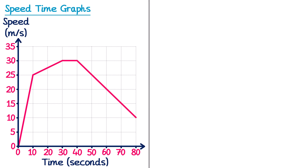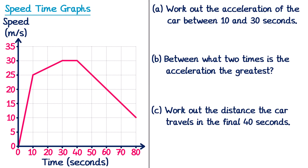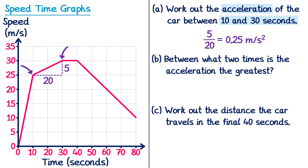Let's look at what an exam question could look like for this topic. Part A says: work out the acceleration of the car between 10 and 30 seconds. The acceleration equals the gradient, so we find the gradient between 10 and 30 seconds. The change in x is 20 and the change in y goes from 25 to 30, so that's 5. So 5 ÷ 20 = 0.25 m/s².